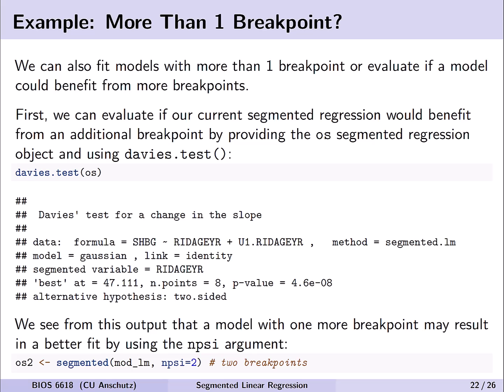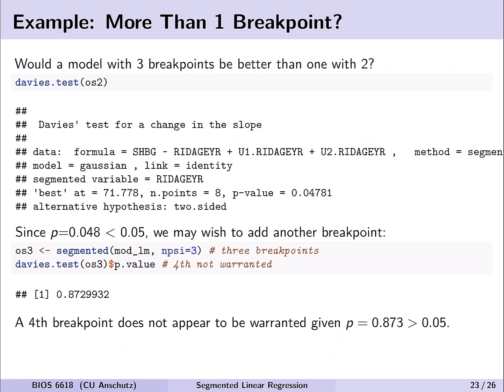Another question is whether one breakpoint was enough. This is extremely easy to test with segmented regression: we use Davies' test, giving it the segmented object with one breakpoint as the null model and asking if it's worth adding another. The result shows a very significant p-value still less than 0.001, providing evidence to fit a new model using the npsi argument to specify two breakpoints, saving it as os2.